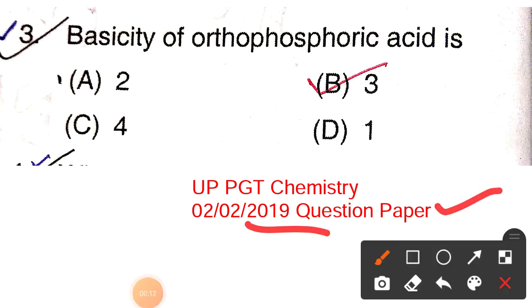The question is: what is the basicity of orthophosphoric acid? Four options are given below: 4, 2, 3, and 1.